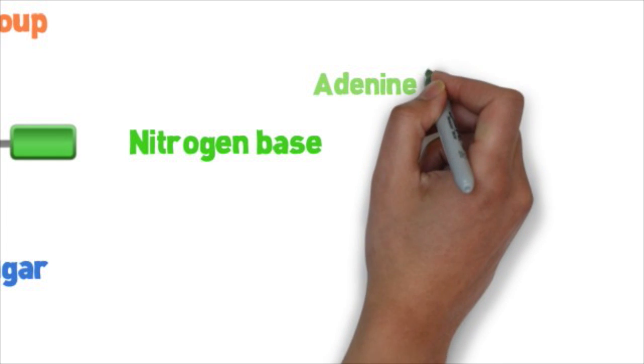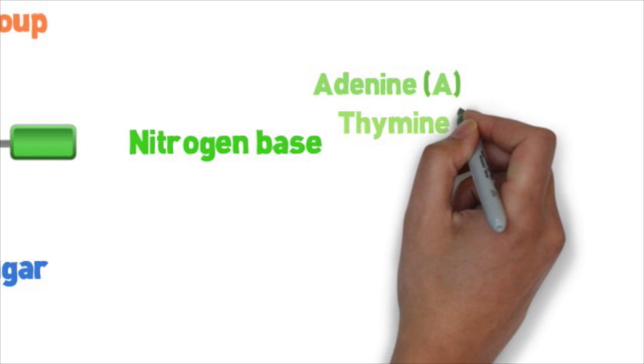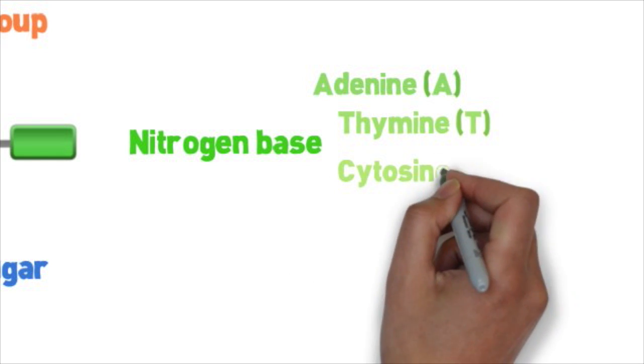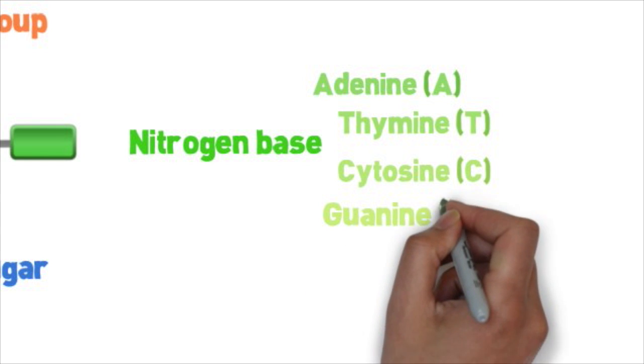A nucleotide has four different types of nitrogen bases. They are adenine, which is represented with a capital A, thymine, represented with a capital T, cytosine, with a capital C, and guanine, with a capital G.